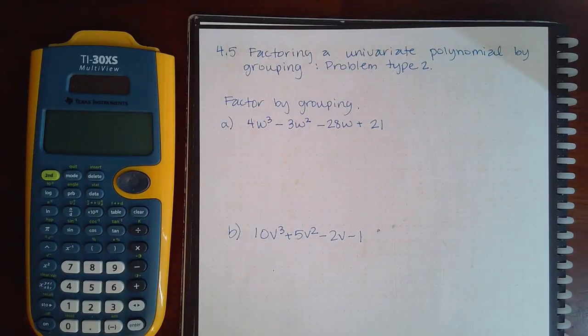So here we have 4.5 factoring a univariate polynomial by grouping problem type 2. It says factor by grouping.